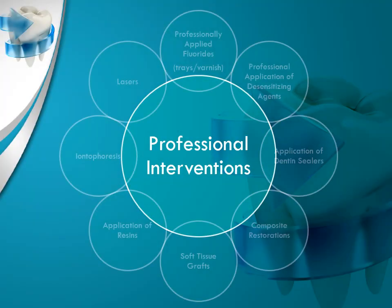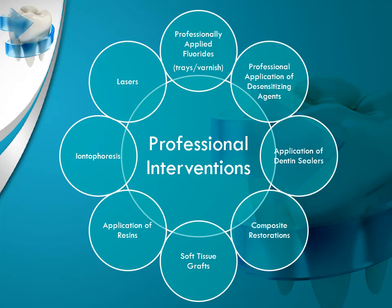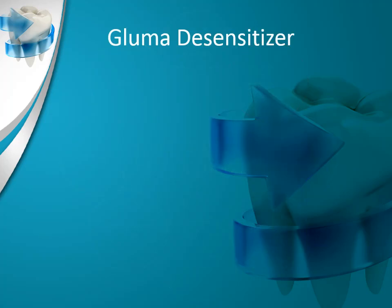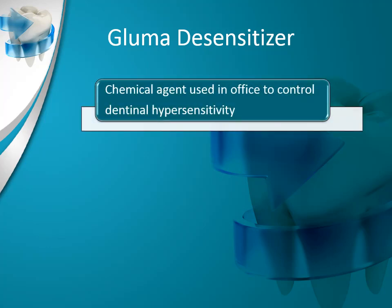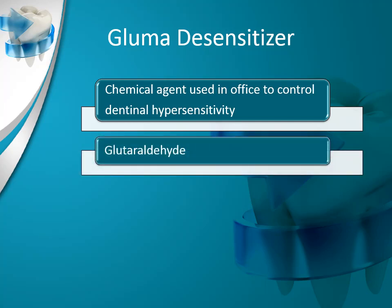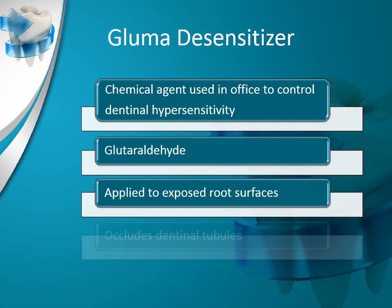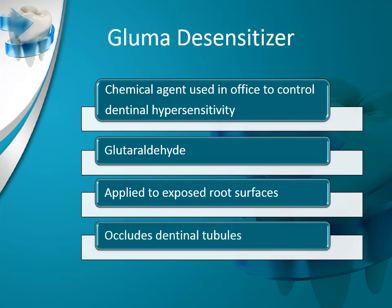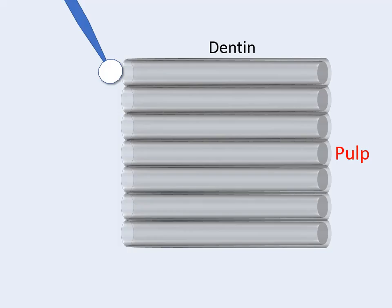Although a variety of in-office methods are used to decrease dentinal hypersensitivity, these are used as a last step in managing the patient's sensitivity. Today, we will focus on one of the main in-office treatments that's used: the application of GLUMA. GLUMA is a chemical agent used as an in-office remedy for the control of dentinal hypersensitivity. The chemical agent used in GLUMA is called glutaraldehyde, and it is applied to exposed root surfaces where it works by occluding the dentinal tubules.